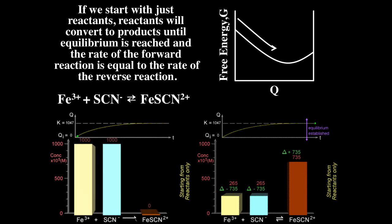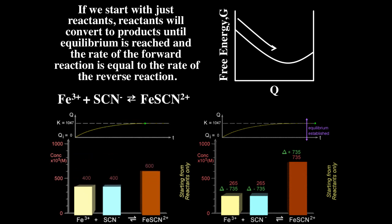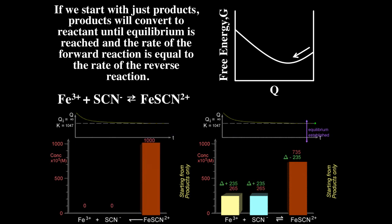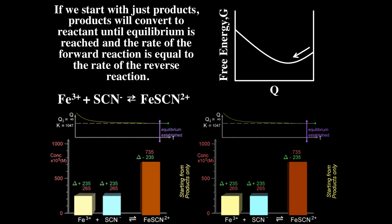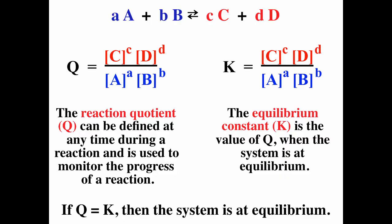Initially, with only reactants, only complex formation is possible. As product concentration increases, the dissociation rate increases until both rates are the same. Starting with only products, the dissociation rate is initially faster than formation. As reactant concentrations increase, the rate of formation increases until both rates are the same. Q and K look the same — both are products over reactants with coefficients as exponents — but Q monitors the reaction while K is a constant for a specific reaction at a specific temperature.